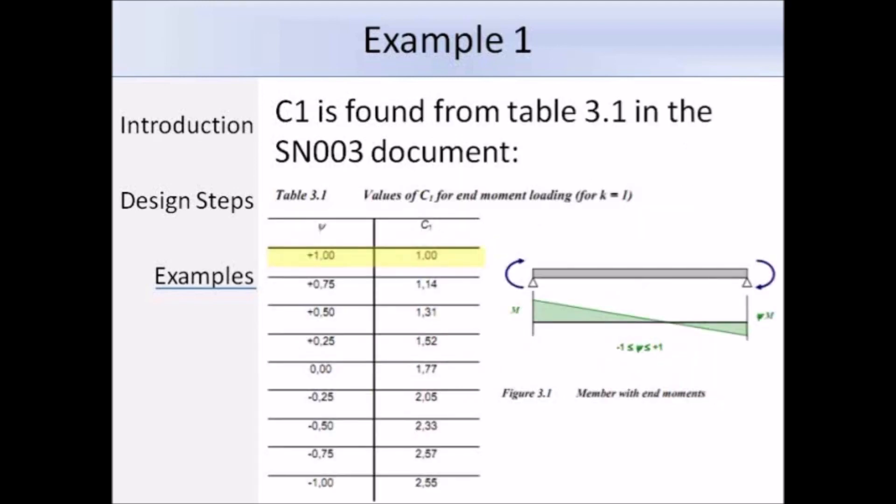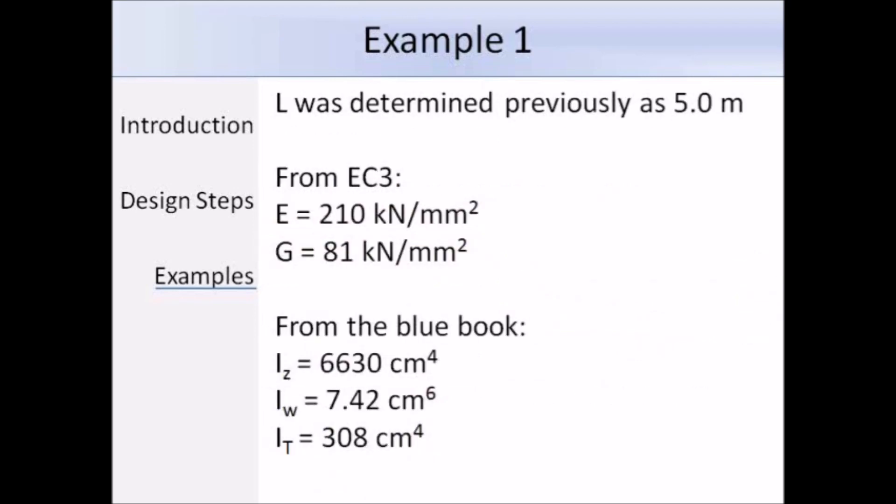So we need to determine the value of C1, and since the bending moment is constant along the segment, C1 will be equal to 1. So these are the other terms that we need in order to work out MCR, so we've already worked out L, the distance between points of lateral restraint as 5 m, Young's modulus and the shear modulus are given in the eurocodes, and the second moment of area about the minor axis and the warping and torsional constants can be found in the product standards.